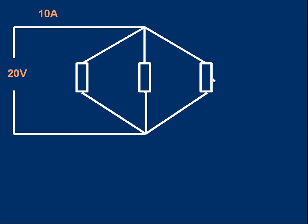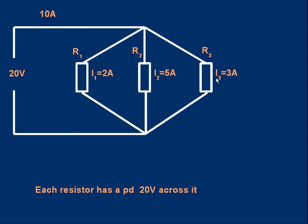In general, the resistances are not equal. Let's put some data in: the first resistor has resistance R1, the second R2, the third R3. Let's say the current through the first resistor I1 is 2 amps, I2 is 5 amps, I3 is 3 amps. Note that the currents add up to 10 amps: 2 + 5 + 3 = 10. Also note that each resistor has the same potential difference across it — they each have 20 volts applied.